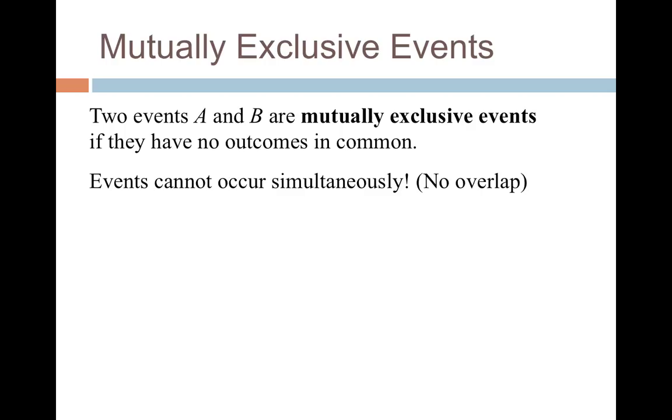For instance, if we think about a deck of cards, drawing a 5 and a 10 are mutually exclusive. You can't be both of them at the same time. But drawing a 5 or a heart, those are not mutually exclusive. You can be a 5 and a heart at the same time. There is overlap.